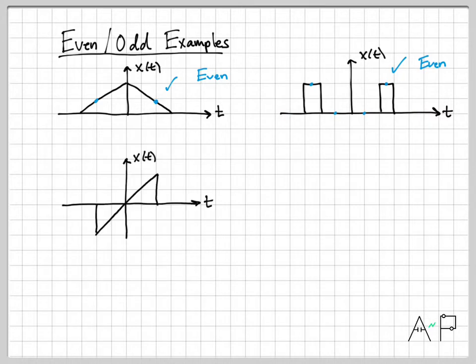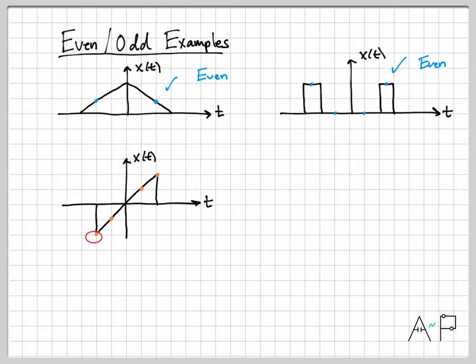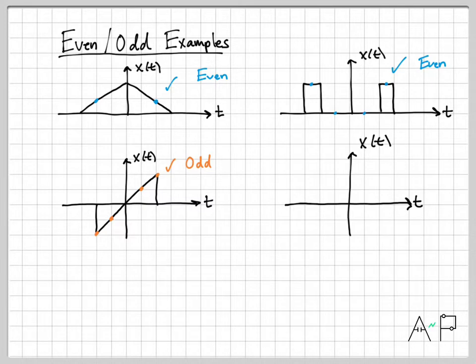Let's look at some odd examples. Pick a positive time t, go to the corresponding negative time — this has an amplitude that's the negative of that amplitude. That happens no matter what time I choose. If I choose this negative time, at the corresponding positive time I have the negative of the amplitude. So this is an odd signal, and it happens for every single time t on the time axis.